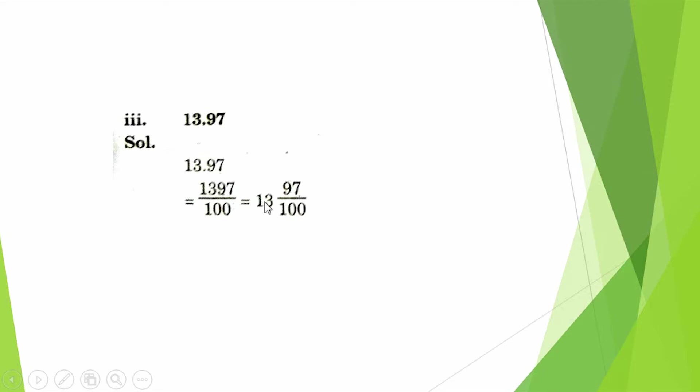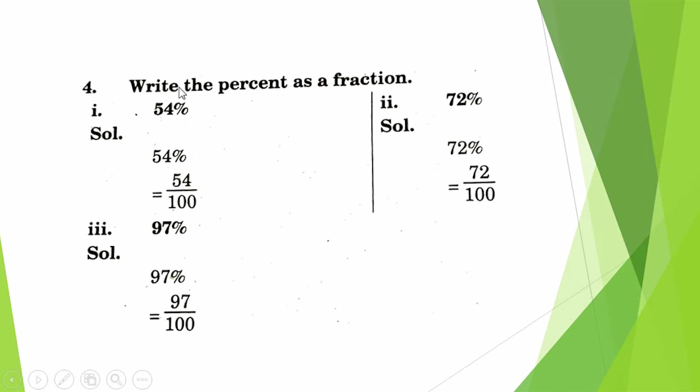13.97. We draw 1 at the place of the point and draw zeros. There are two values after the point. Therefore we get 1397 ÷ 100.